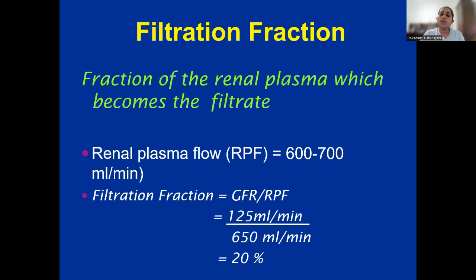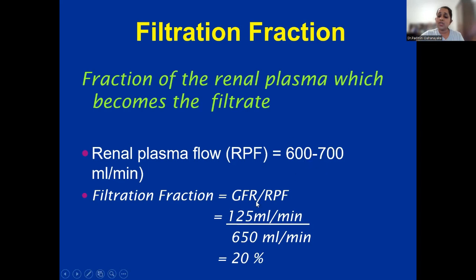Another key term to learn is filtration fraction — the fraction of the renal plasma which becomes the filtrate. Renal plasma flow is usually 600 to 700 milliliters per minute. Filtration fraction equals GFR divided by renal plasma flow. Taking average renal plasma flow as 650 and GFR as 120 milliliters per minute, the filtration fraction is 20%.